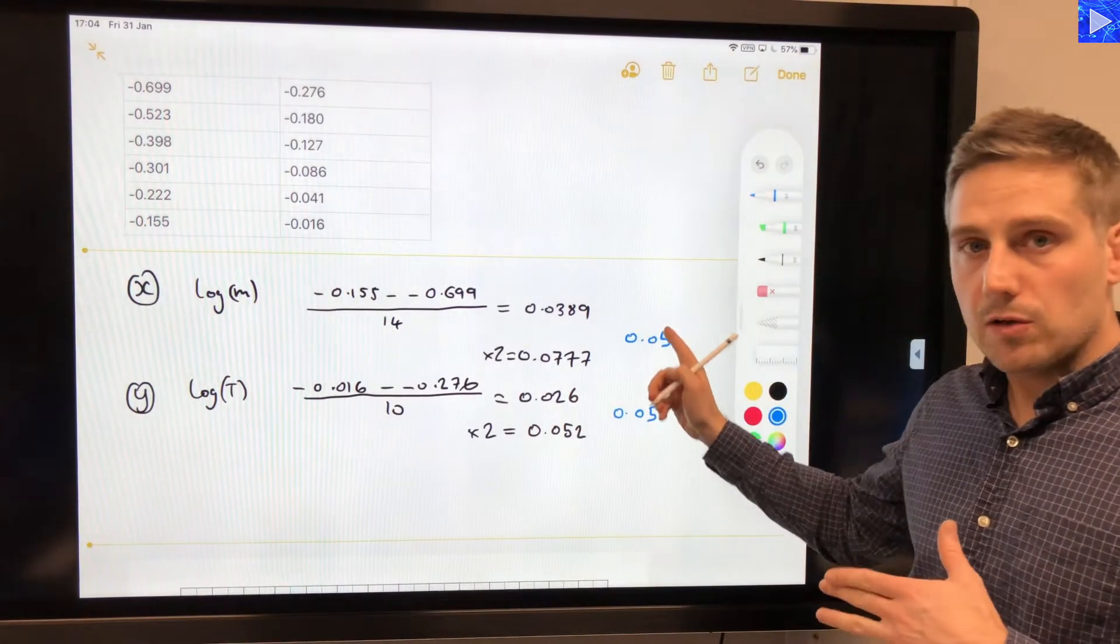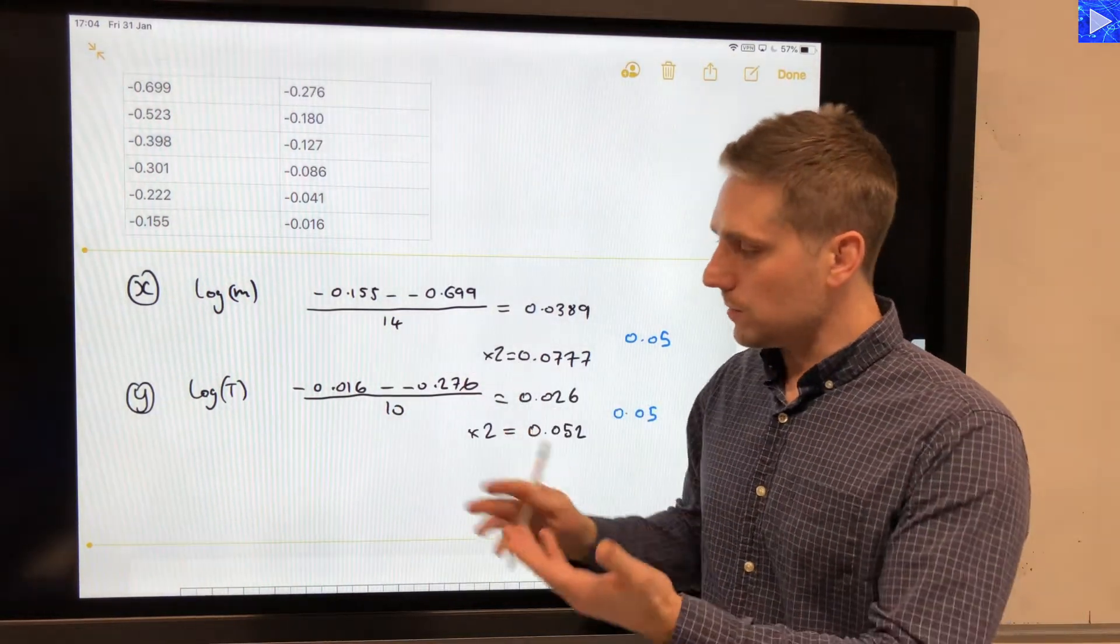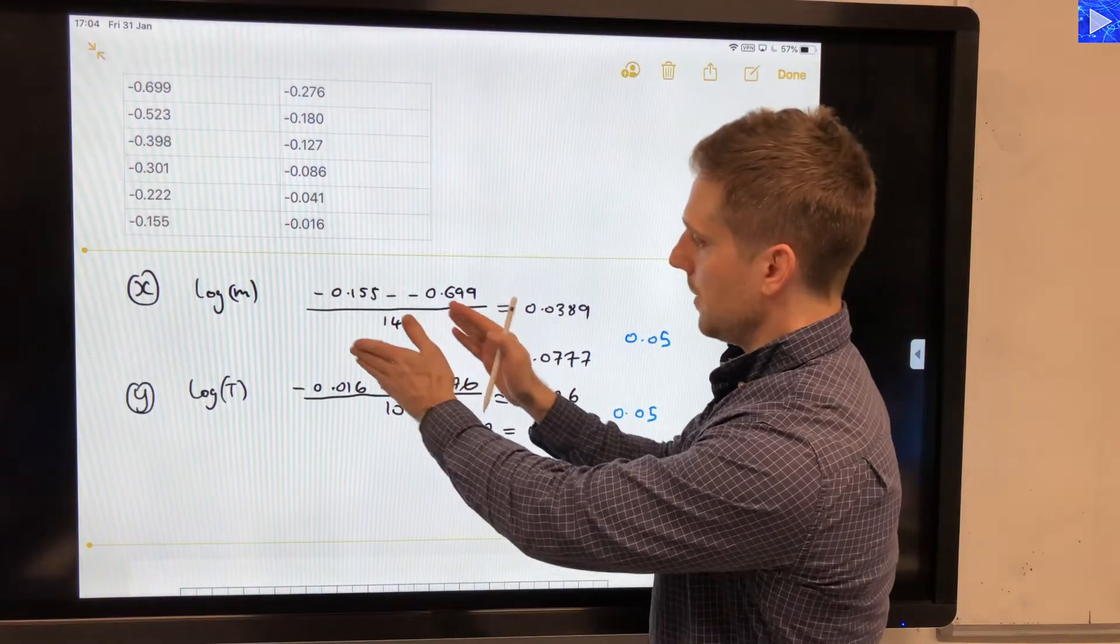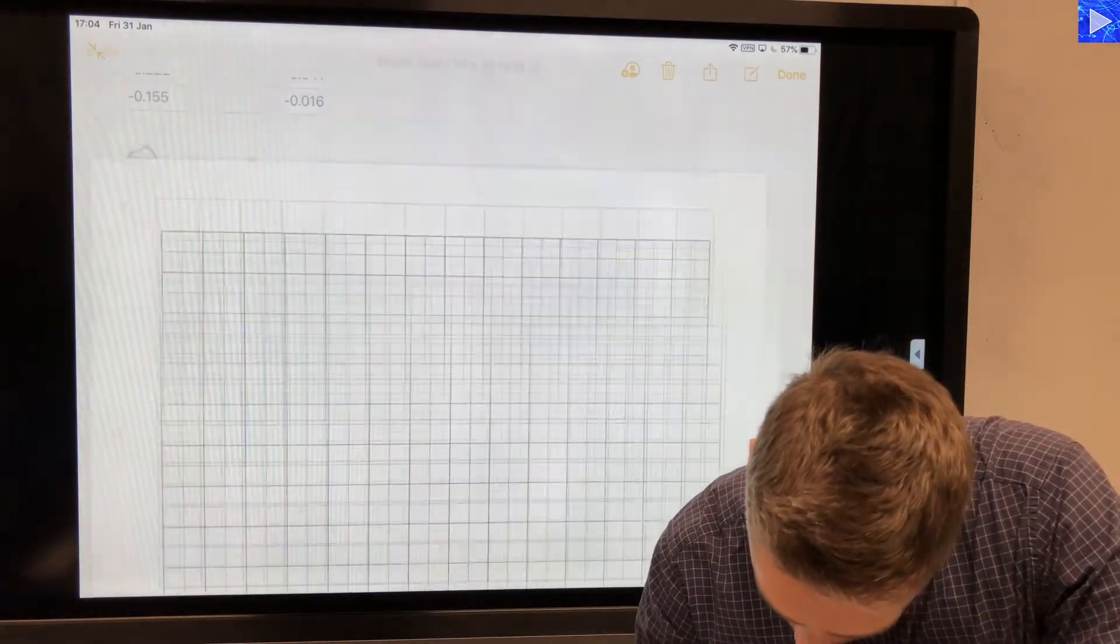I'm actually using the same scale on the x and y axes, but obviously we've got different starting points, because the data is using a different range. So let's have a look at how that looks on the grid.